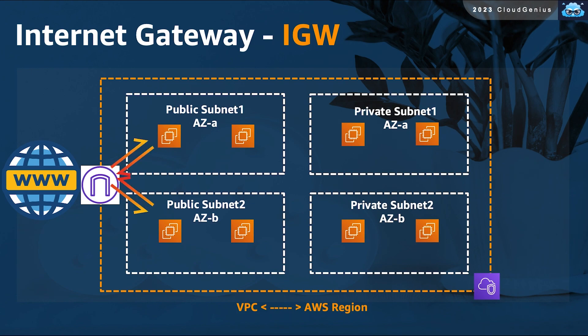One final step is needed. You have to adjust the routing tables of your public subnets, point to the created IGW, and specify it as your default route to the internet. Now, all traffic destinations outside of the IP address range of your VPC would become reachable through the IGW.